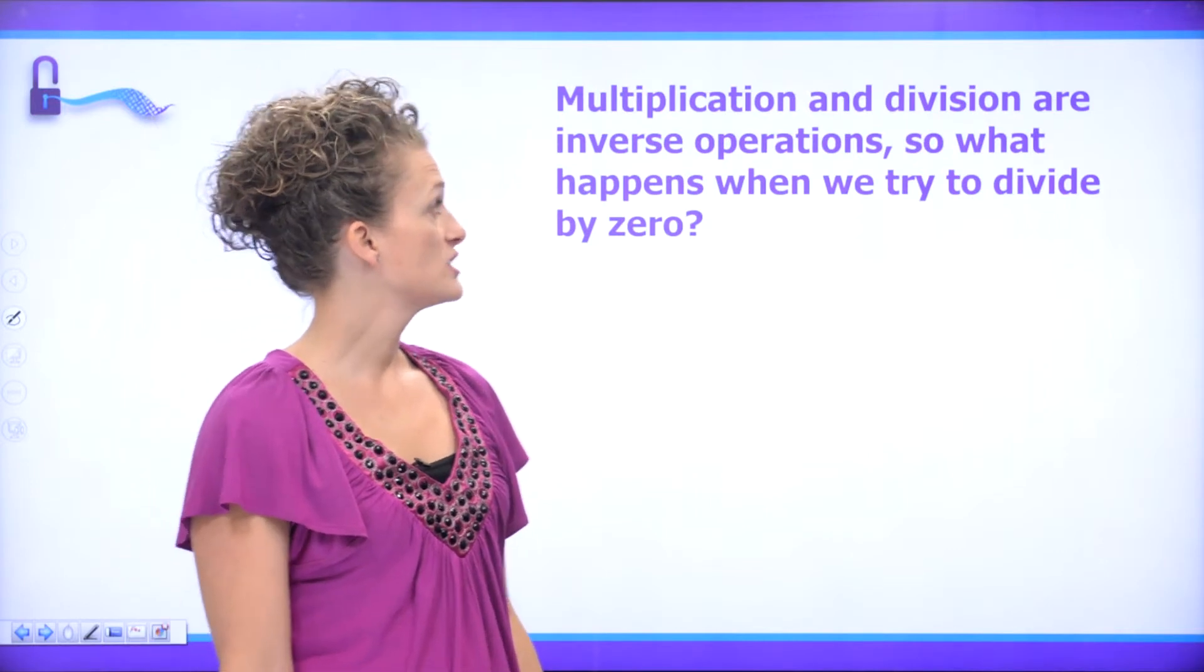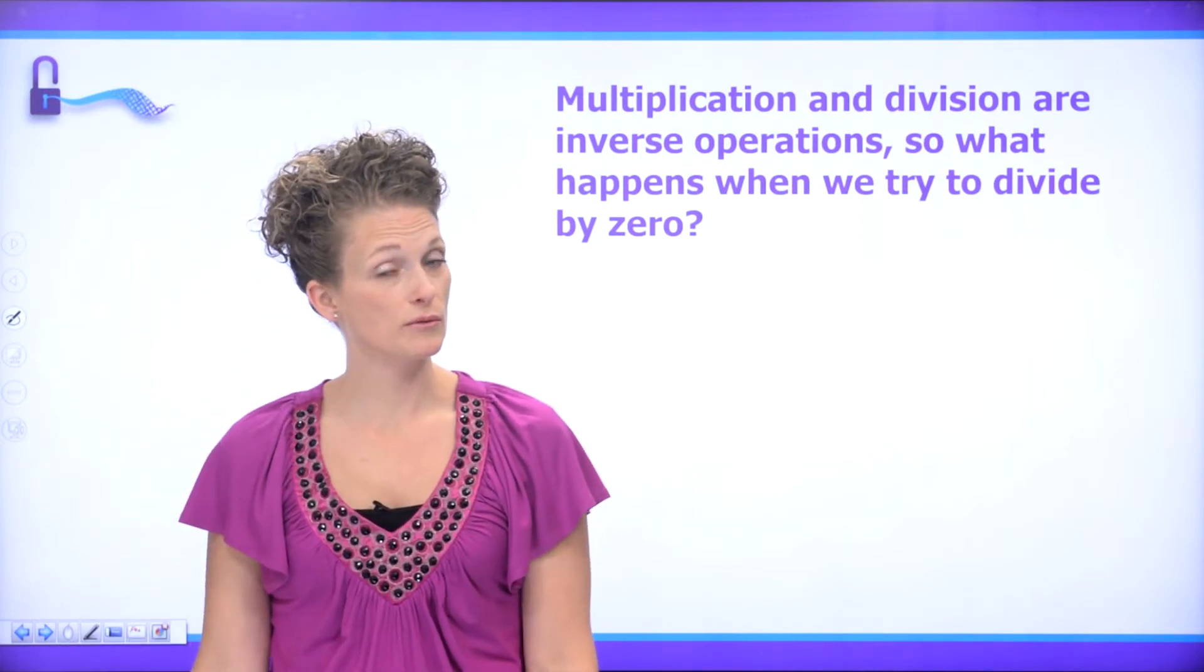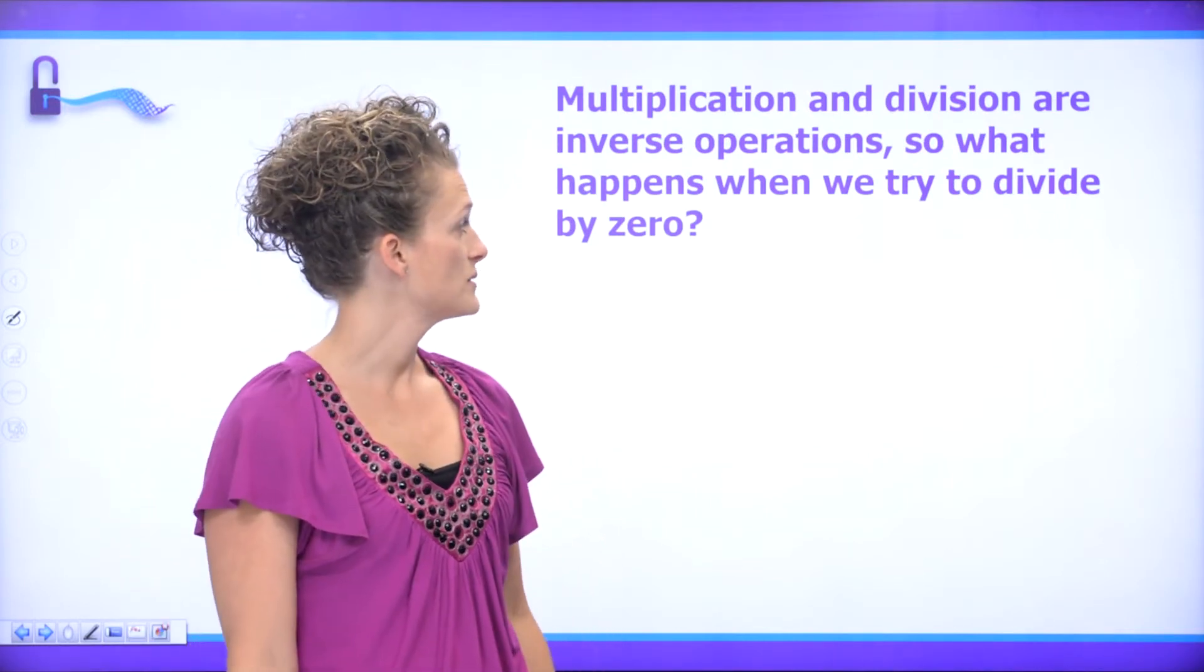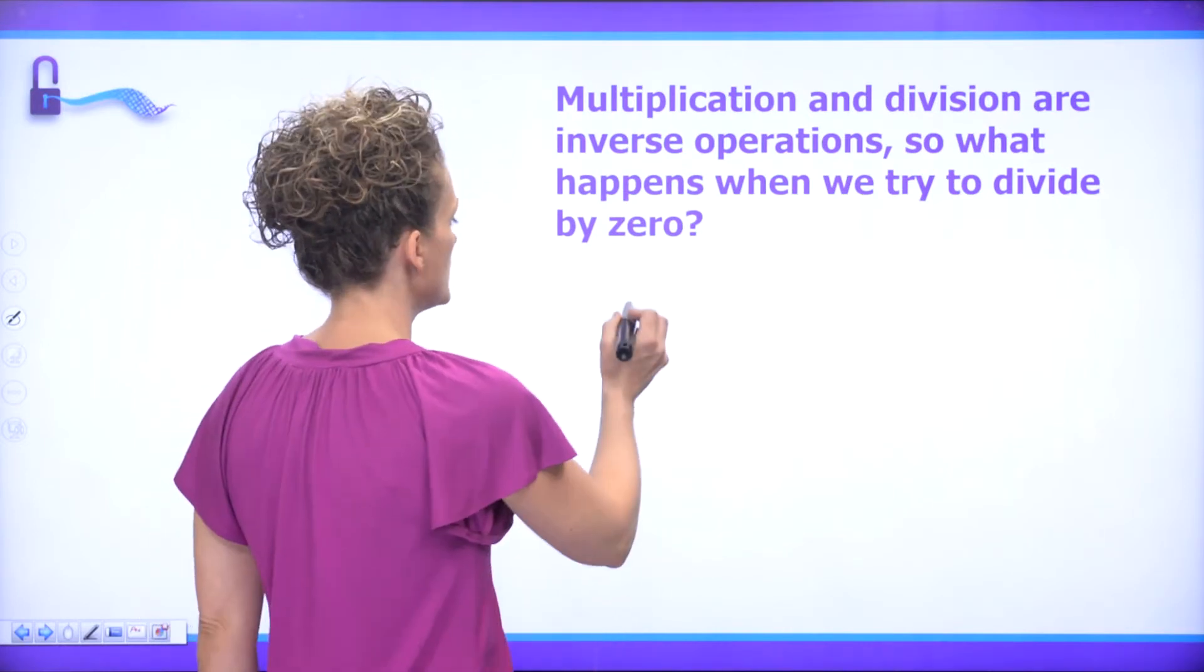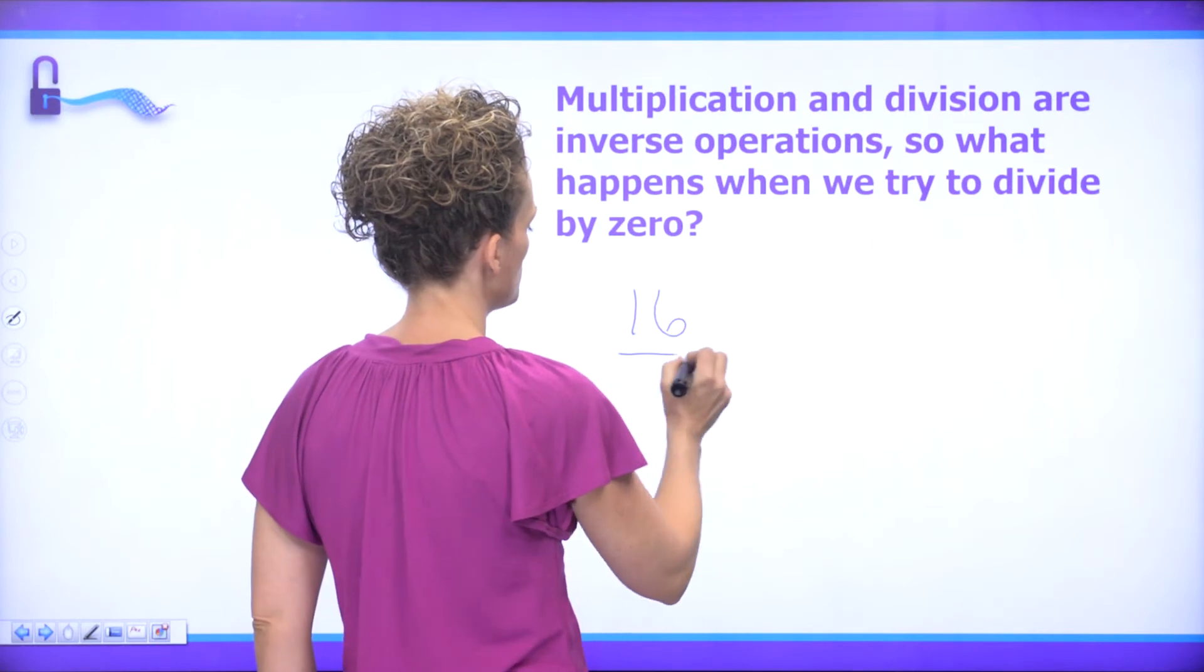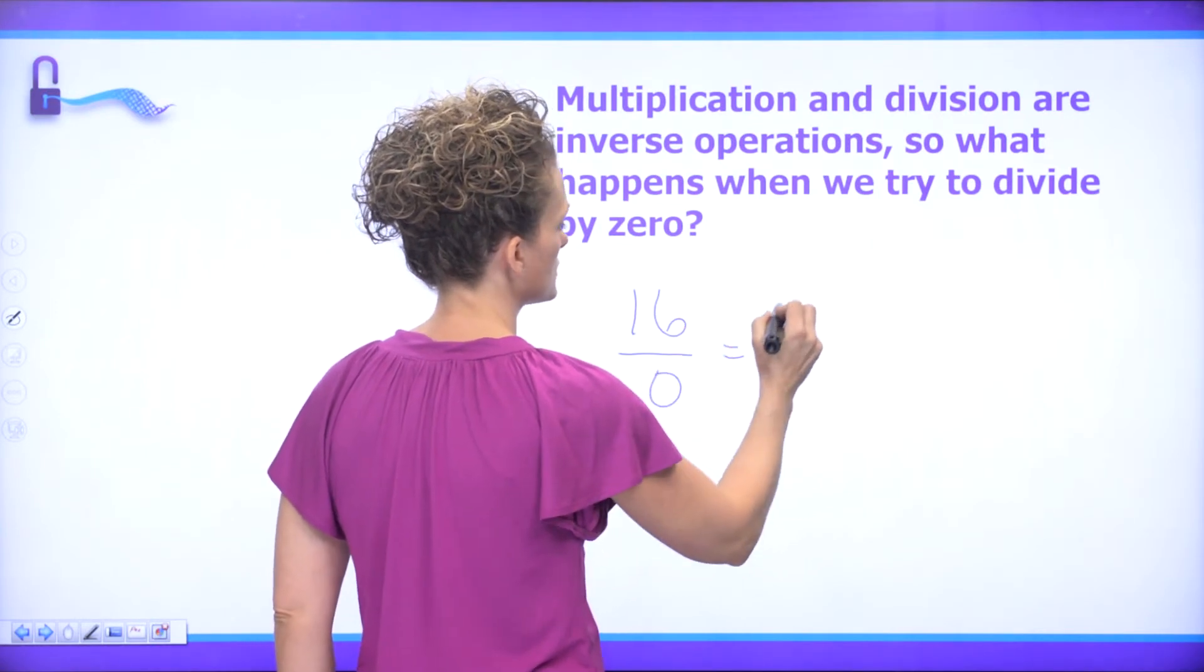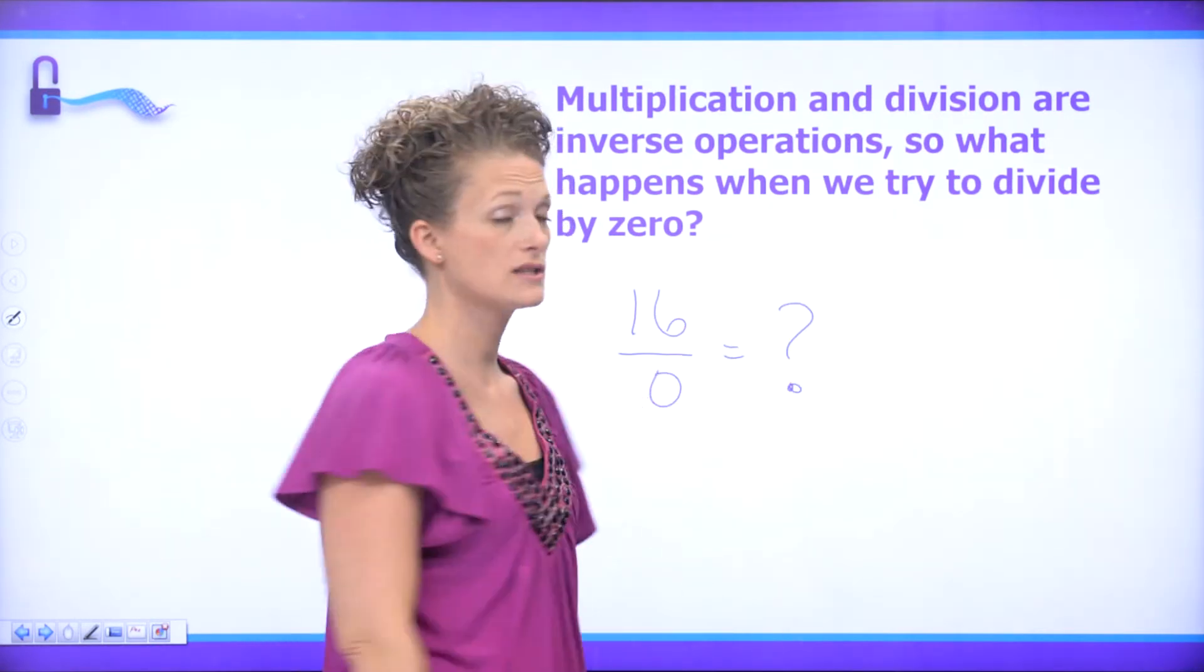All right, so multiplication and division are inverse operations. So what happens when we try to divide by zero? Well, you have to think of it this way: if we have 16 divided by 0 equals what, this is what we want to decide.